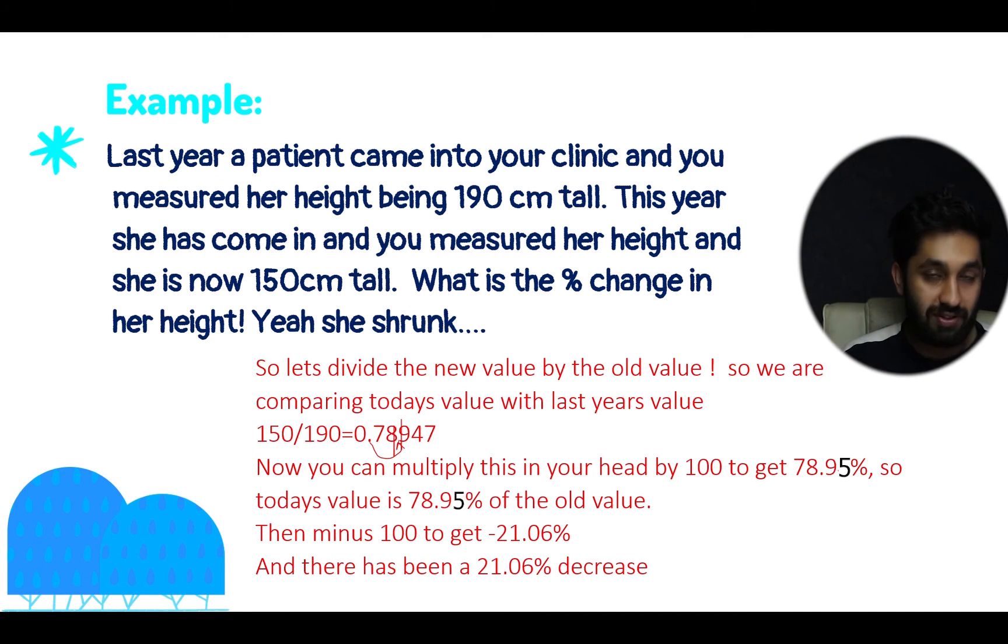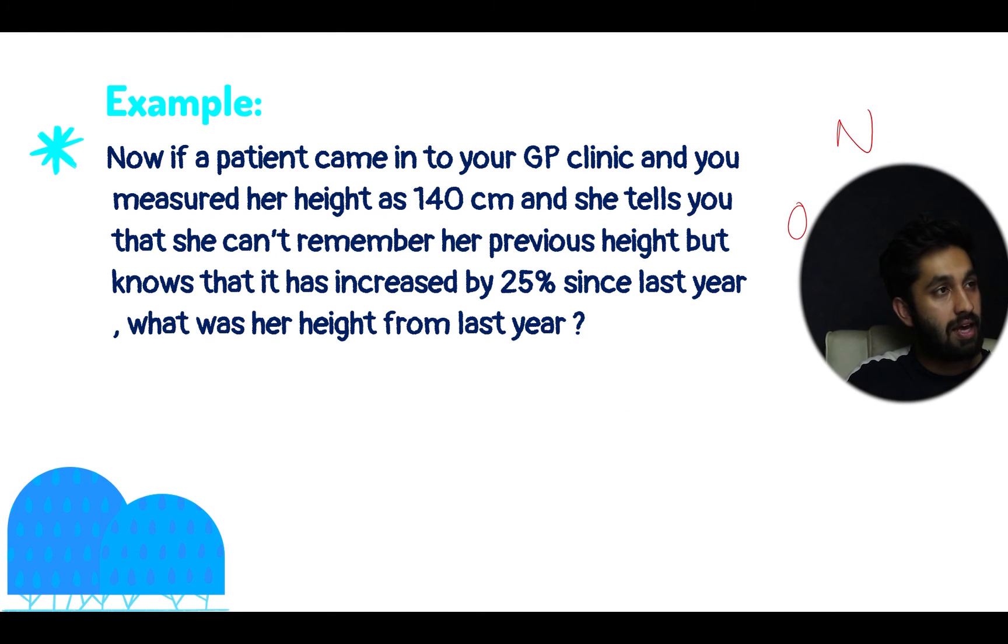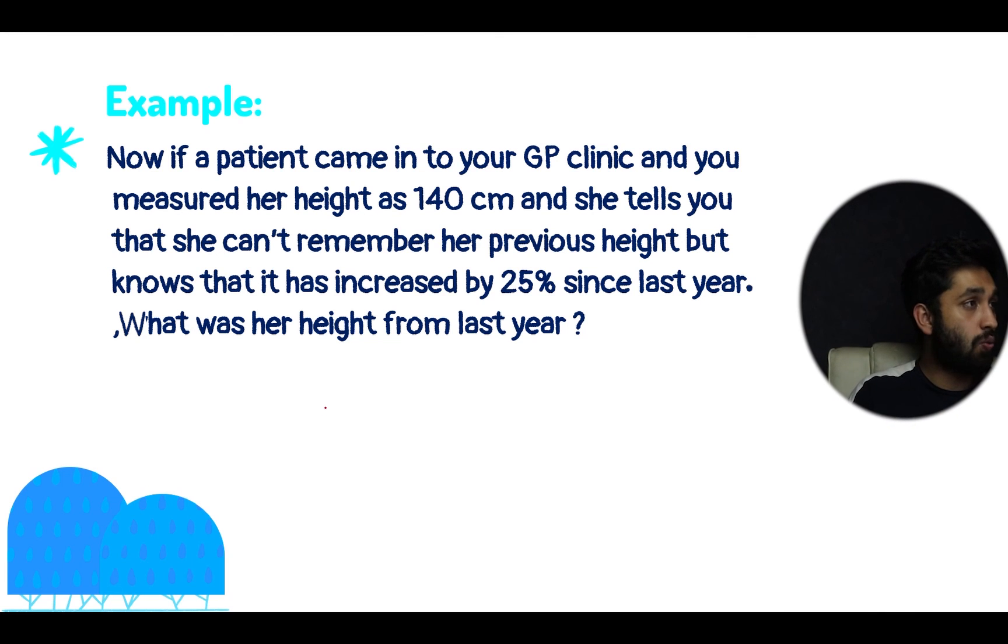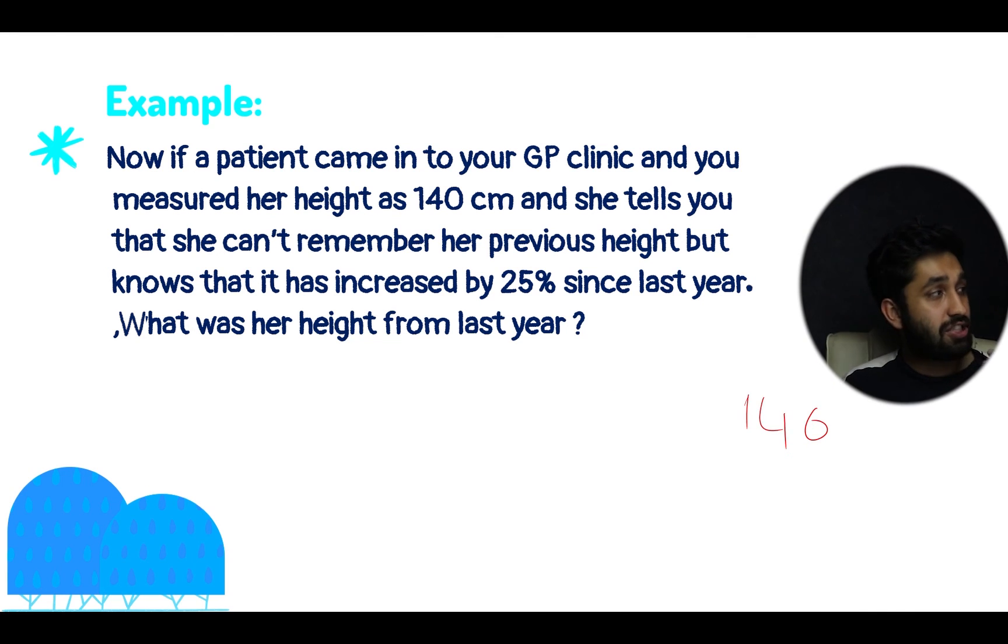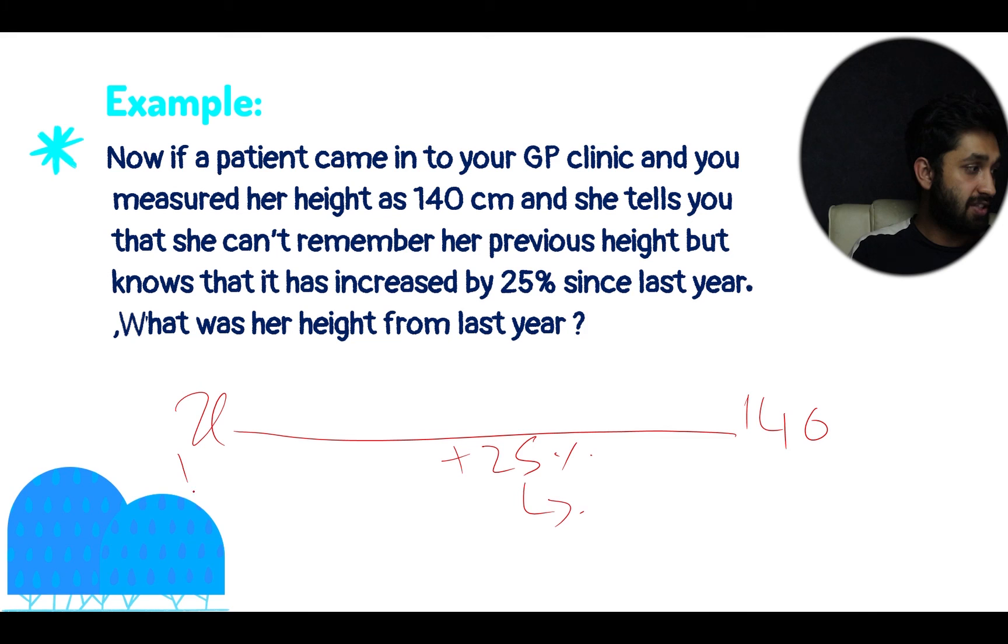Let's have a go at another example. Using NOB again, now if a patient came into your GP clinic and you measured her height as 140 centimeters, and she tells you that she can't remember her previous height but knows that it has increased by 25% since last year, what was her height from last year? We don't know what our height is from last year, but we know it's increased by 25%. So we need to calculate our base. We start off at 100%, we know it's increased by 25%, so that gives us 125%. We add on 25% to 100 and then divide this by 100 to give us 1.25, which is our percentage change in decimal form.